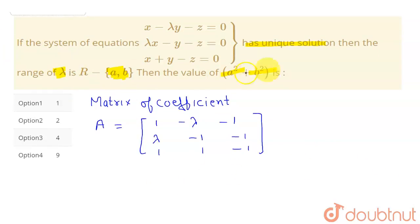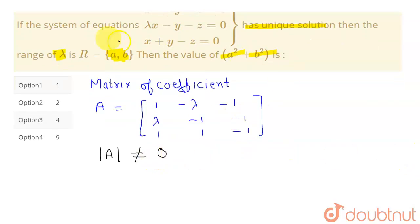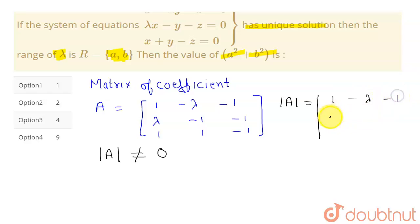What is the condition for having a unique solution? The determinant of this matrix should not be equal to 0. If the determinant is 0, then the equations will not have a unique solution. So I have to find the determinant of A.